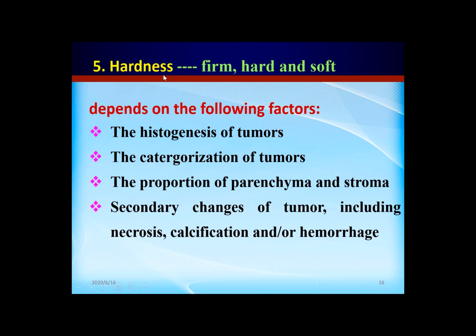Five: hardness. The hardness may be firm, hard, or soft. The hardness depends on the following factors: the histogenesis of the tumor — for example, if the tumor is derived from fat tissue it's very soft — and the calcification of the tumor, and the proportion of parenchyma and stroma.